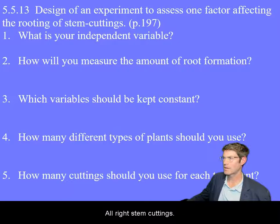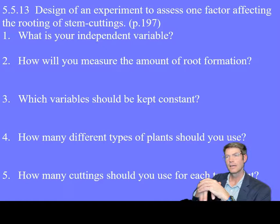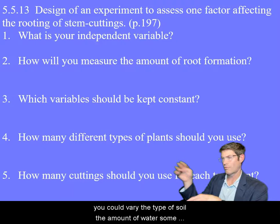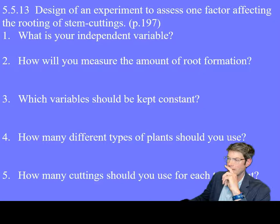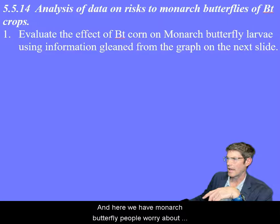For the stem cutting activity, think about the variables that need to stay the same versus the variable you want to change. You take a plant, cut it a certain way — you could vary how you cut it, how long the cutting is, the type of soil, amount of water, or a chemical you add. But if you change one of those things, everything else needs to stay the same. Write that out using the help in your book on page 197.